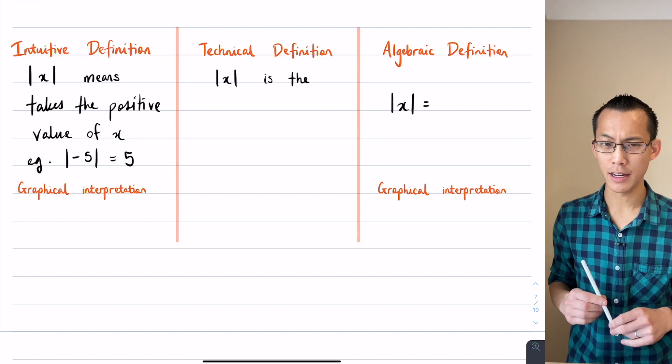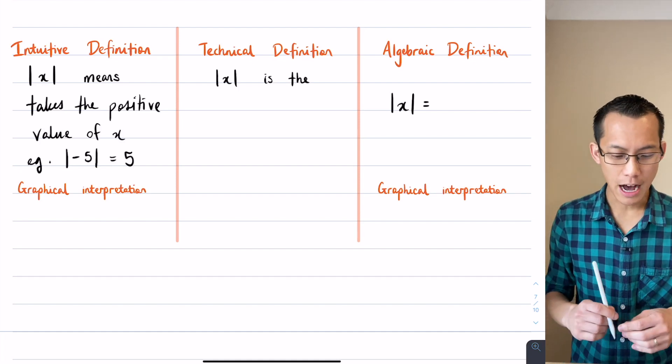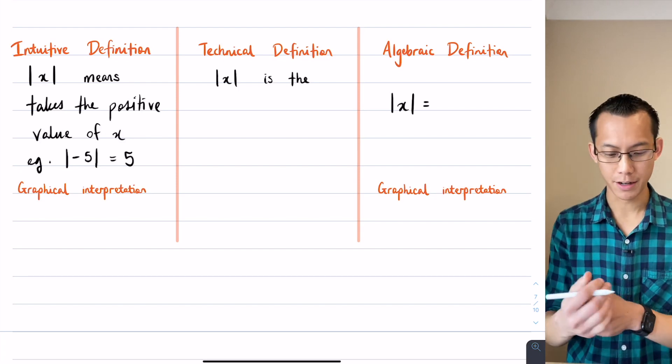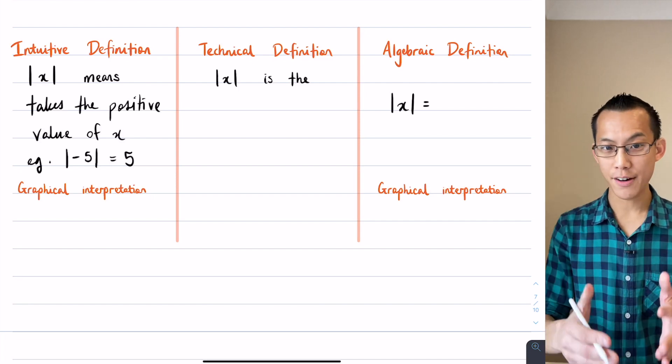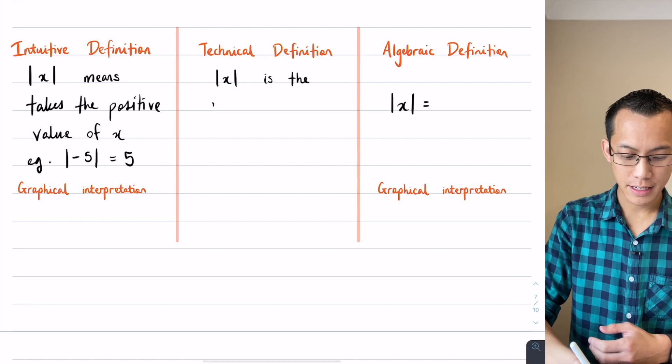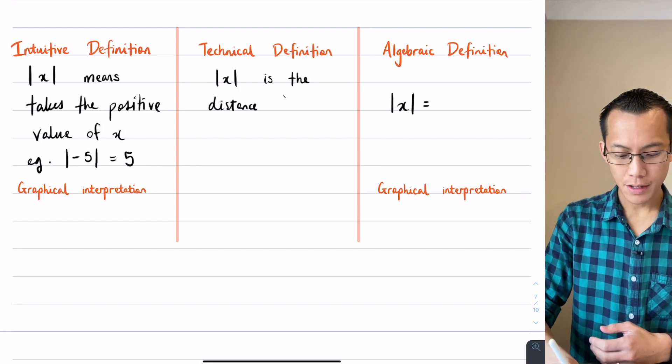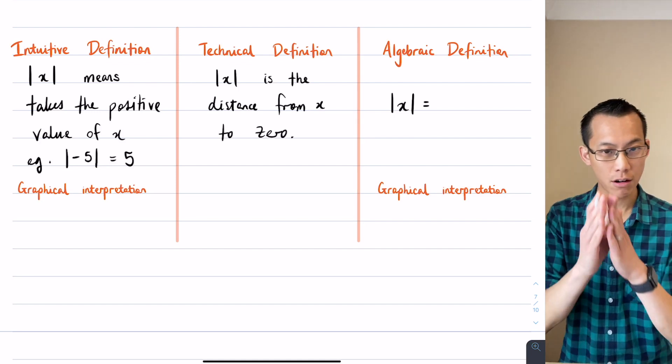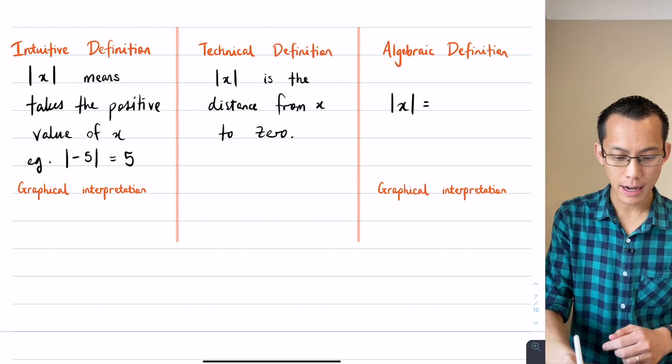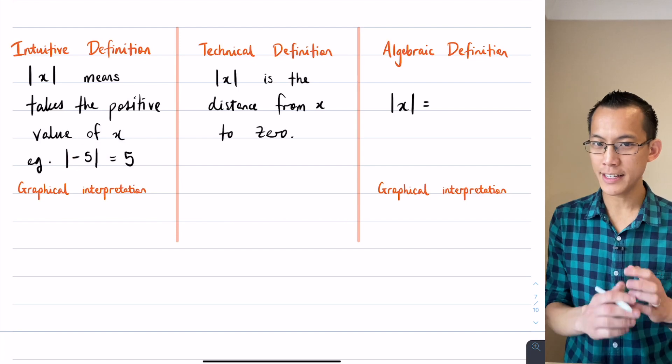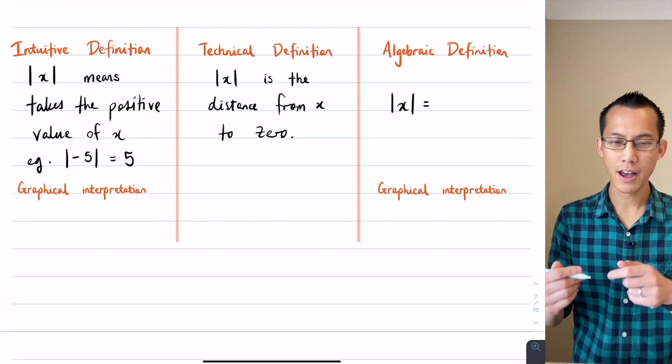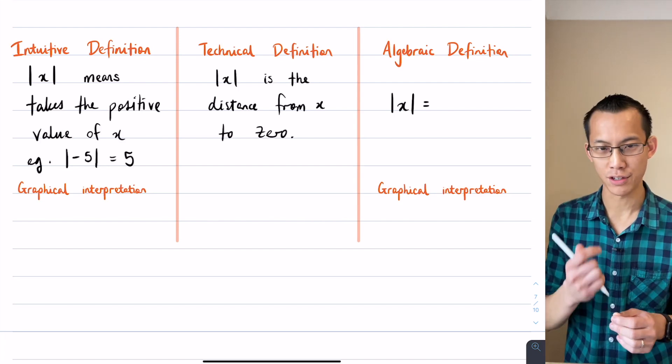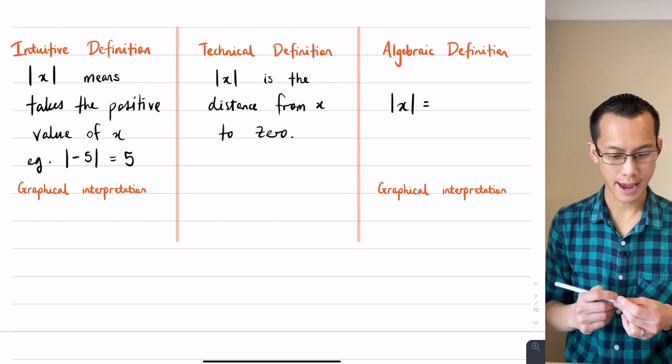We'll come back to this graphical interpretation in a second. How can we make this more technical? A more technical way of describing the absolute value of x is that the absolute value of x is the distance from x to zero. That might mean the origin on a number line. If I said to you the absolute value of negative 5, it isn't just take the positive value, it's also a way of saying how far is this number negative 5 from zero. The answer is it's 5 away from zero, just happens to be in that direction, but the absolute value doesn't care.